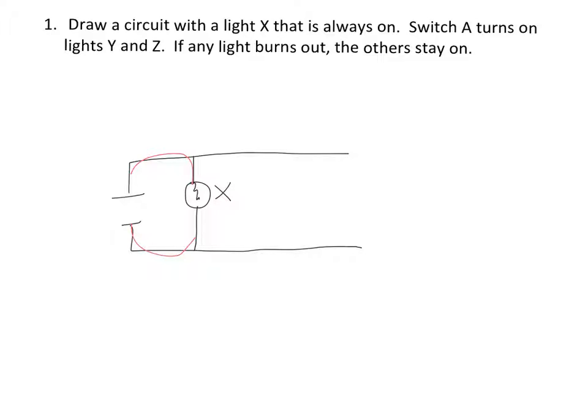Now I want a switch that turns on lights Y and Z. I suggest doing this on the vertical. There's my switch and then lights Y and Z. I want them so that if one burns out the other stays on, so that means they have to be in parallel.